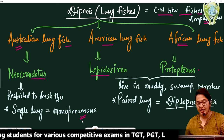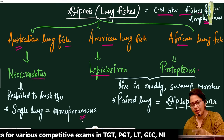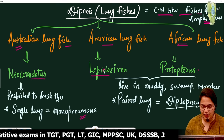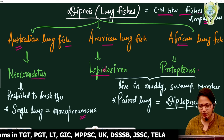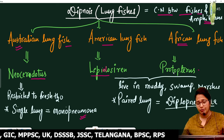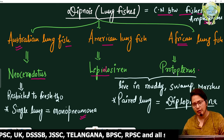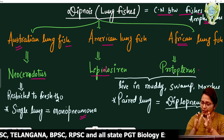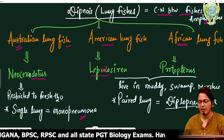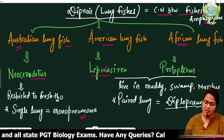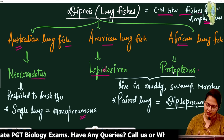But the American lung fish, Lepidosiren, and the African lung fish, Protopterus, are found in muddy, swampy, marshy areas. They have paired lungs, so they are called Diploneumona.